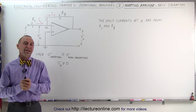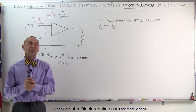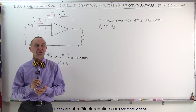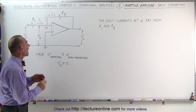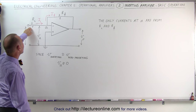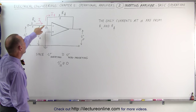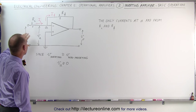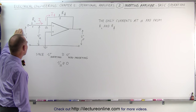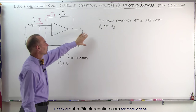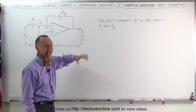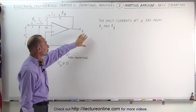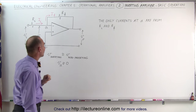Welcome to ElectroOnline. Let's take a look at the basic operations of an operational amplifier. Here we have the input signal connected to the inverting terminal, which means that if the input voltage is positive the output voltage will be negative, and if the input voltage is negative the output voltage will be positive.